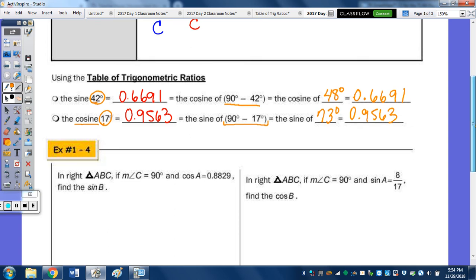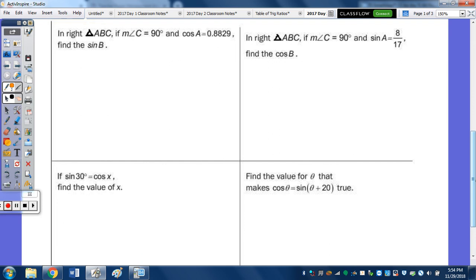Let's see how we can apply that to examples one through four. So in the first one, it says we have right triangle ABC. Measurement angle C is the 90 degree angle. So let's put A here, B here. And it says the cosine of A is 0.8892. Find the sine of B. Since they are complementary, we know that the cosine of A equals the sine of B. So the sine of B is going to be equal to 0.8829.